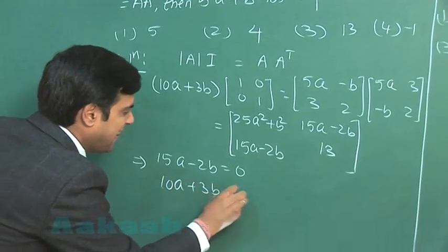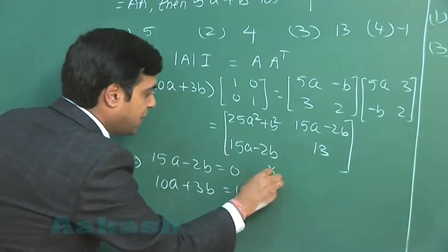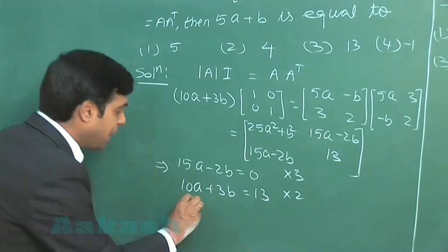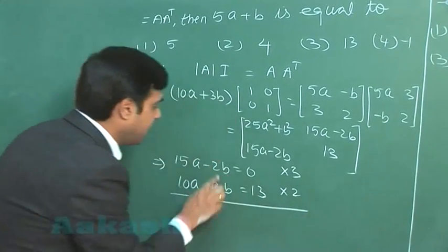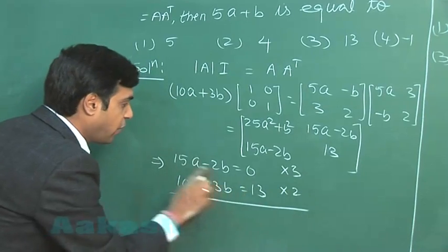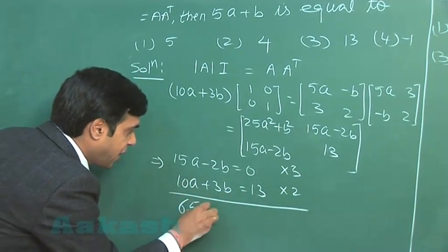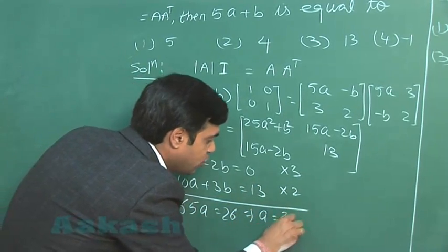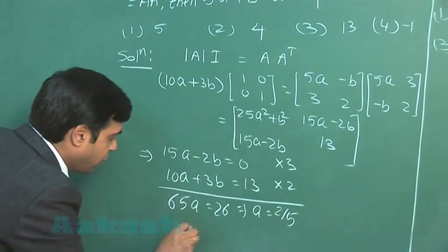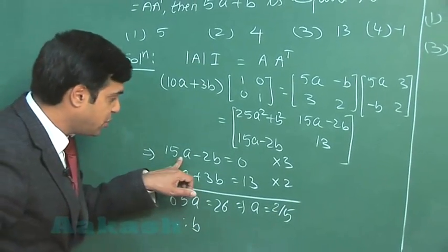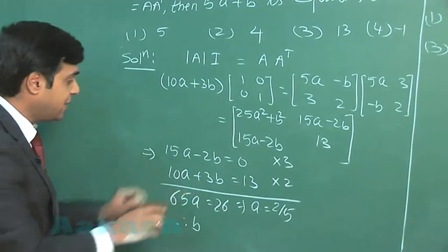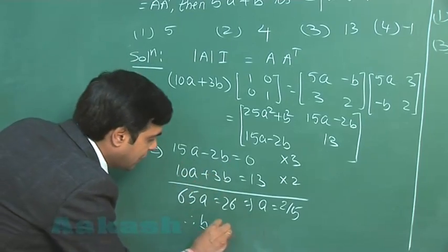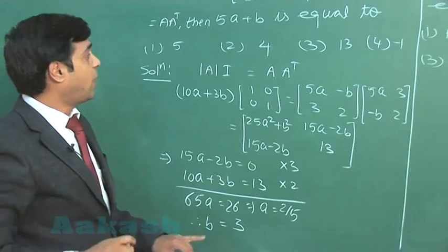If I multiply this equation by 3 and the other one by 2 and simply add, so I obtain b is cancelled. This gives me 45a plus 20a, that is 65a equals 26, or a equals 2 by 5. Therefore the value of b, by substituting here 2 by 5, we can get here 15 into 2 by 5, that is 6 minus 2b equals 0, that is b equals 3.